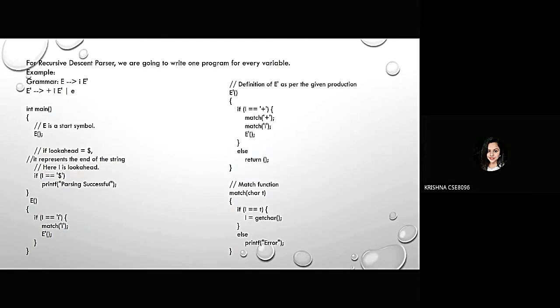For recursive descent parser, we are going to write one program for every variable. Example, E extends to I E dash, E dash extends to plus I E dash slash epsilon. Here, E is a starting symbol and main function will call the method E. Here, if l equals to equals to i, then it will call the match method. And here, if l equals to equals to T, then the method will call the get care method and it also assign it into l. Otherwise, it will print the error mode. And then it will call the E dash method.